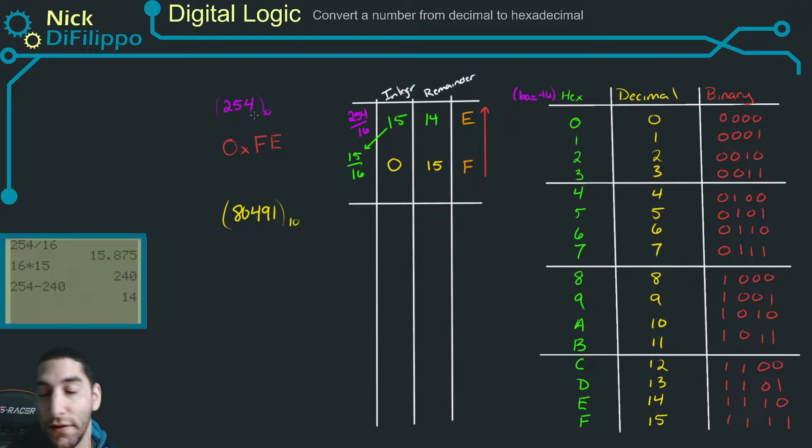So 254 is equal to hexadecimal FE. And you should be able to check this. You can convert this to binary. You can try to reconvert from hex to decimal, and you'll get this is equal to 254. So let's look at a different example, but we're going to use the same procedure. We're going to look at 80,491 and we're going to start by dividing this by 16.